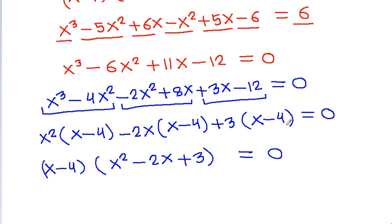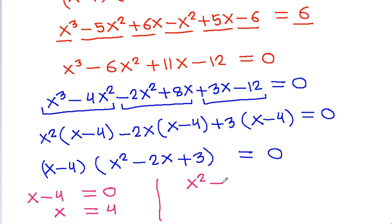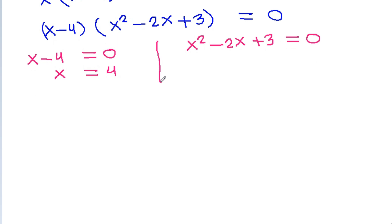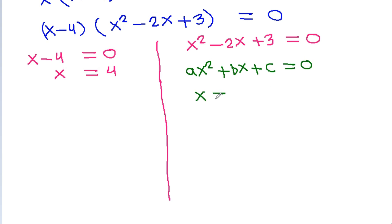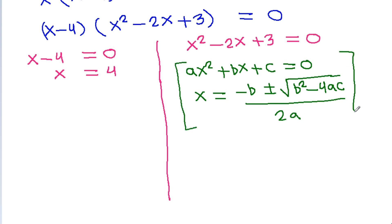Taking (x-4) common gives (x-4)(x² - 2x + 3) = 0. So either (x-4) = 0, meaning x = 4, or x² - 2x + 3 = 0. For ax² + bx + c = 0, x equals minus b plus or minus square root of b² minus 4ac, divided by 2a. Here a is 1, b is minus 2, and c is 3.